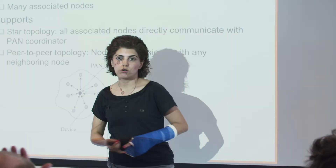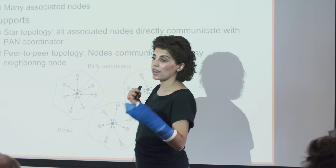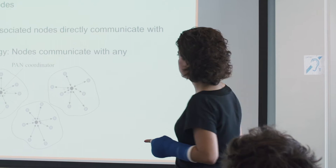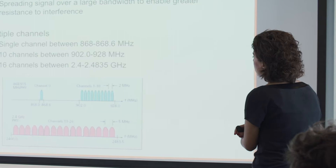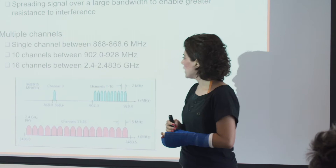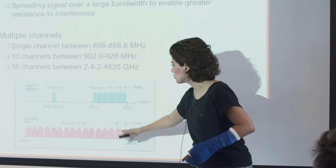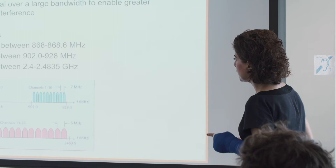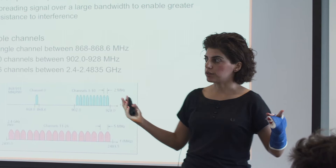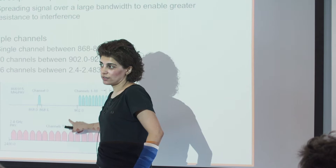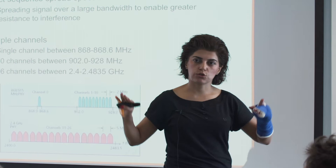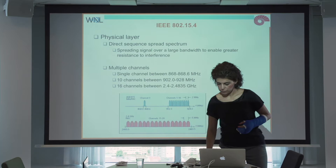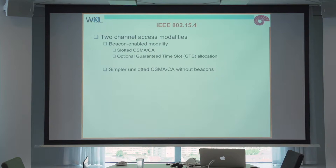In IEEE 802.15.4, we have a PAN coordinator responsible for managing the network and many associated nodes. We may have a star topology where the PAN coordinator is in the middle and every node talks to it, or a peer-to-peer topology where nodes can communicate with any neighboring nodes but the PAN coordinator still coordinates all transmissions. The standard has multiple channels: one at 868 MHz, ten at 900 MHz, and 16 channels at 2.4 GHz, which increases flexibility of scheduling.